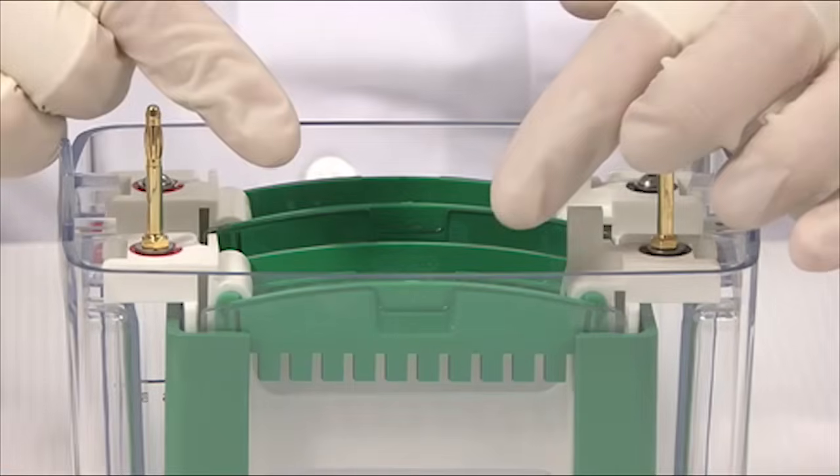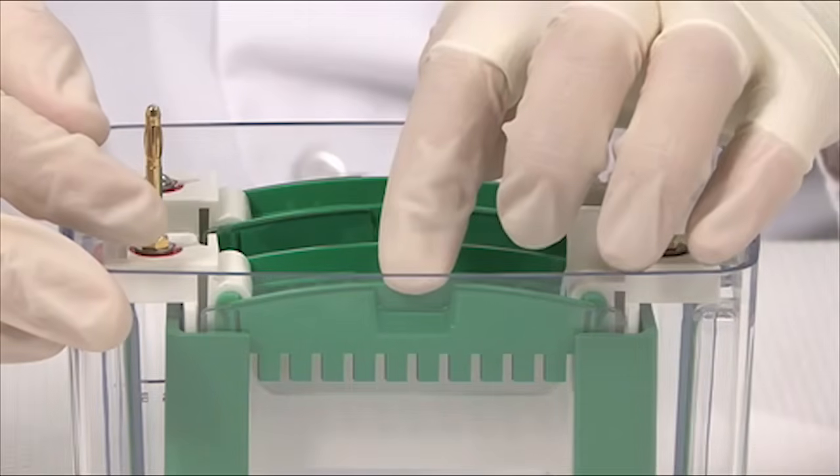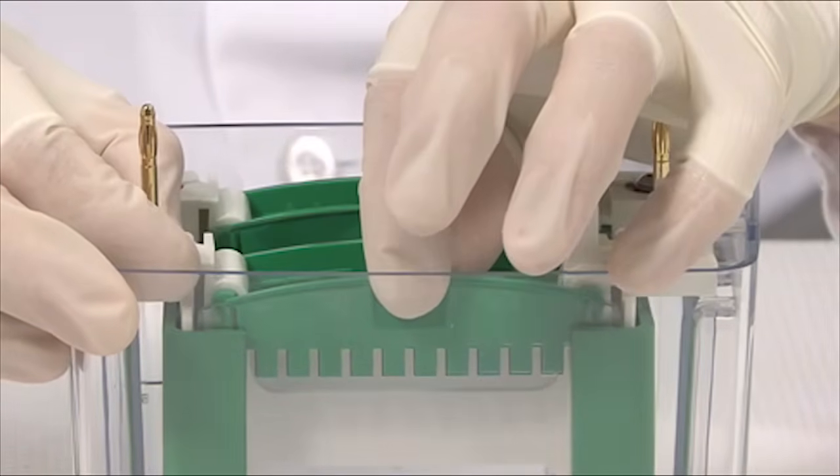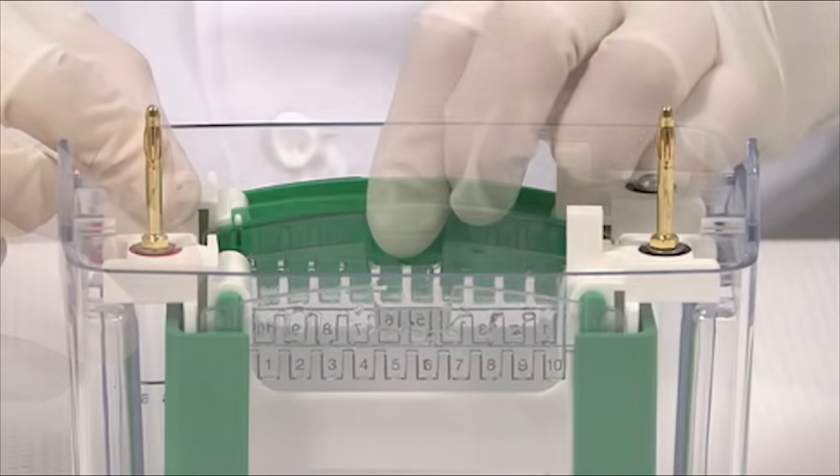After loading your TGX Gels into the TetraCell, remove the combs by locating the notch in the center of the cassette, grasping the comb from the center and lifting straight up and out.